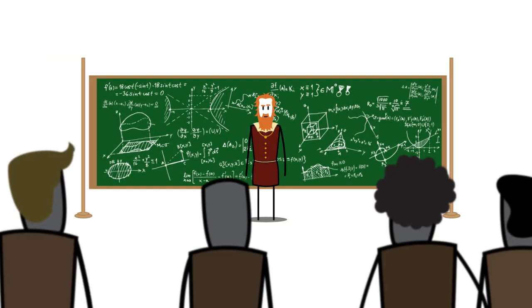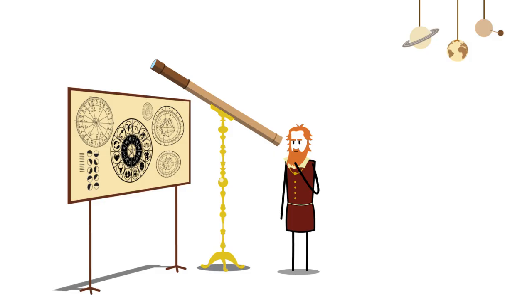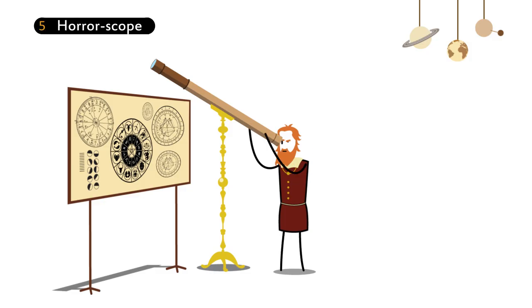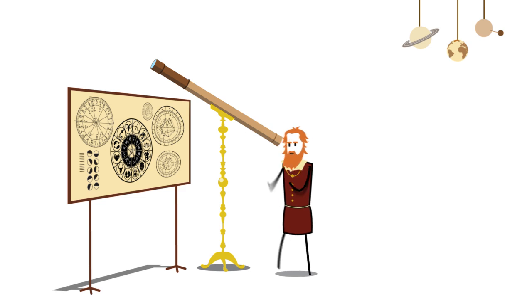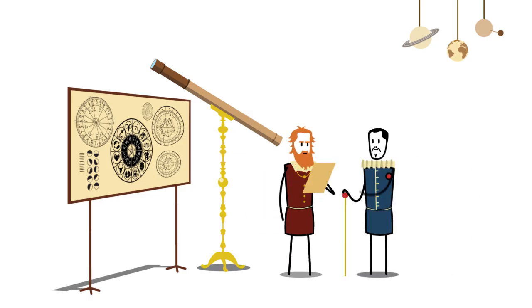Galileo's many interests included the study of astrology, which at the time was a discipline closely allied with mathematics and astronomy. In 1609, he cast a horoscope for the Grand Duke Ferdinand of Tuscany, foretelling a long and happy life.